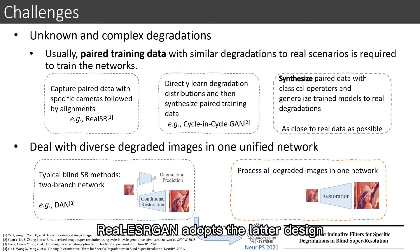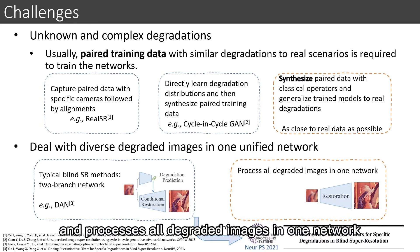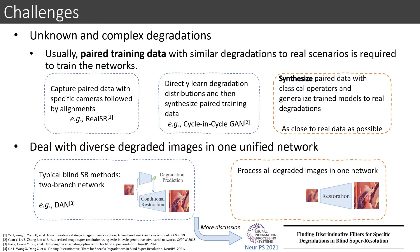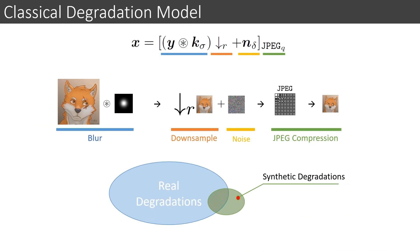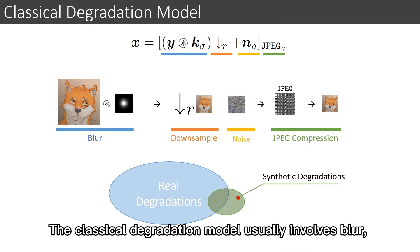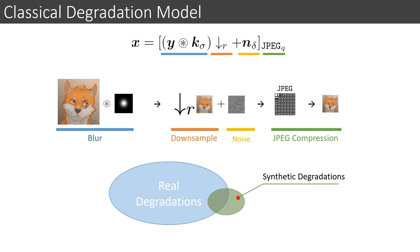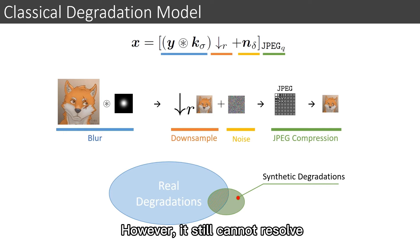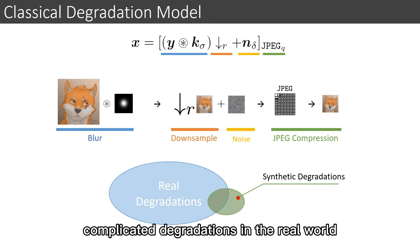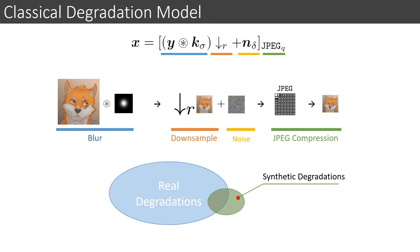Real-ESRGAN adopts the latter design and processes all degraded images in one network. The classical degradation model usually involves blur, downsample, noise, and JPEG compression. However, it still cannot resolve complicated degradations in the real world.